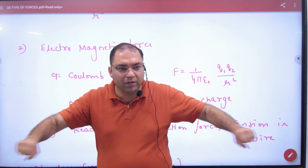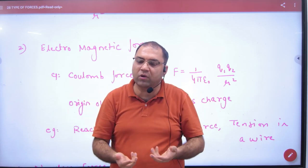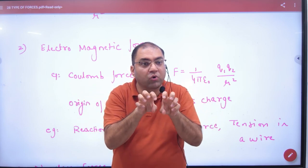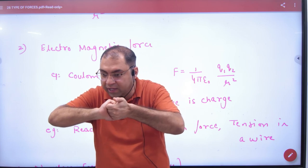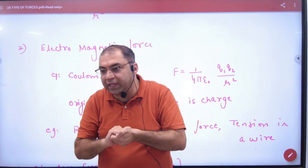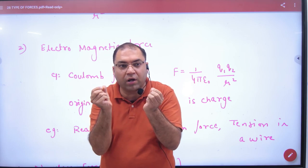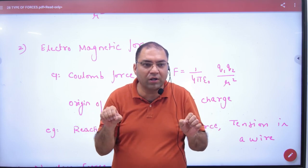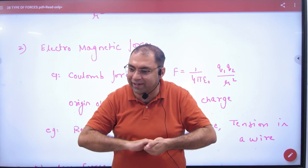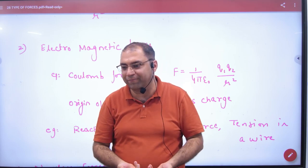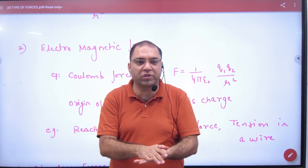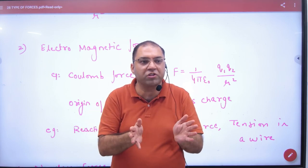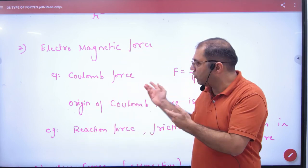Friction is electromagnetic in nature because the charges in atoms try to make bonds. It becomes millions of crore bonds — it is difficult to break and you experience friction. The charge in the atom makes crore bonds from one charge — it is nearly impossible to break. So electromagnetic forces cover handshake, friction, and all charge-based interactions.